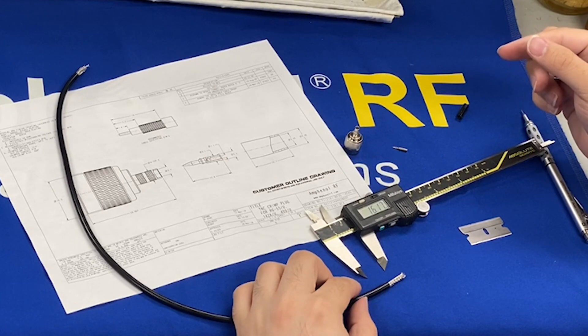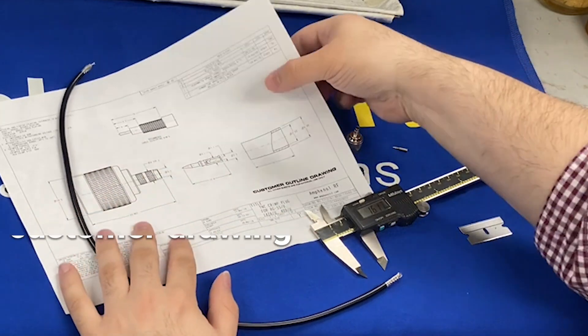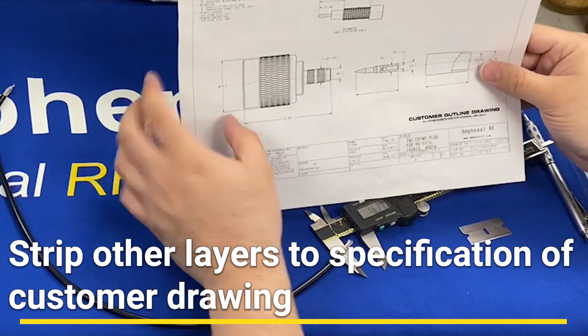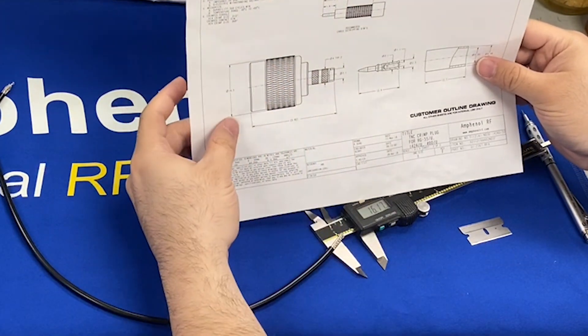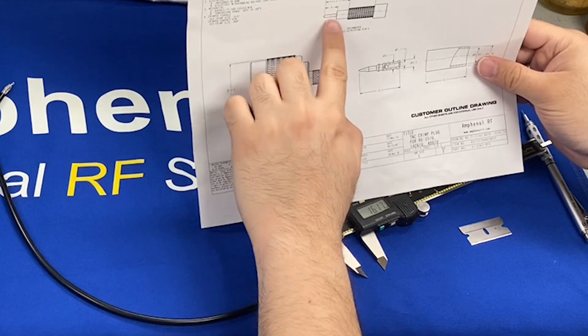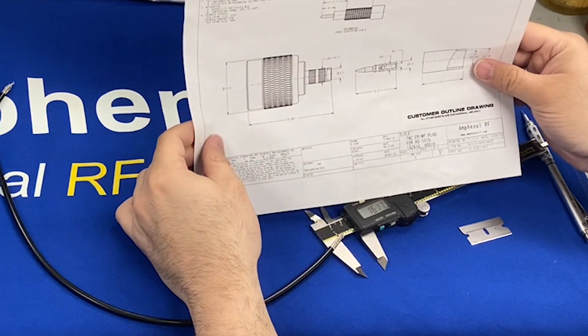And then the jacket may be peeled off. This should now be repeated for the additional layers. You can see from this cable outline drawing that a 16 millimeter dimension is for the exposed braid. There's supposed to be 7.7 millimeters of dielectric and 4 millimeters of center conductor.